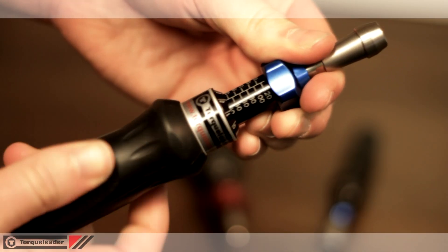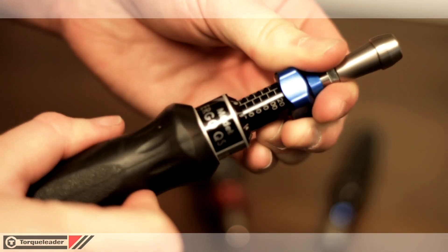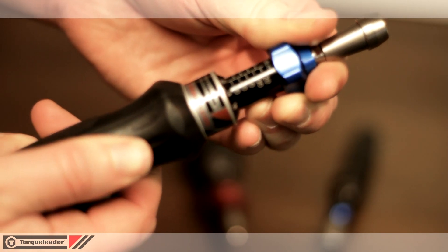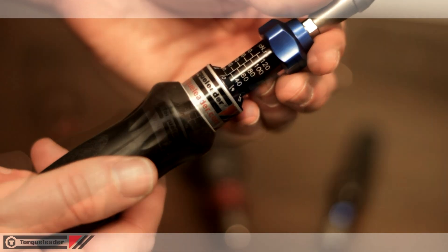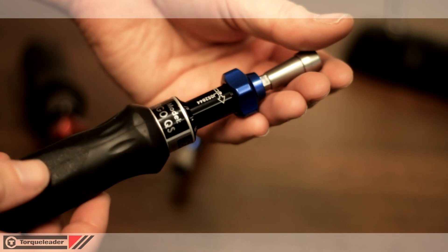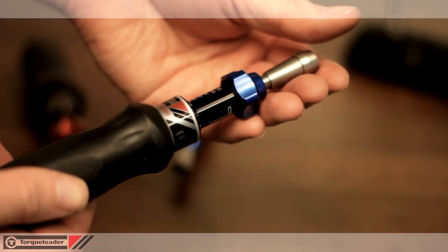To adjust the torque, press down the adjusting knob at the front of the scale, then rotate the handle until the required torque is set. The mechanism locks when the knob is released, preventing accidental adjustment during use.